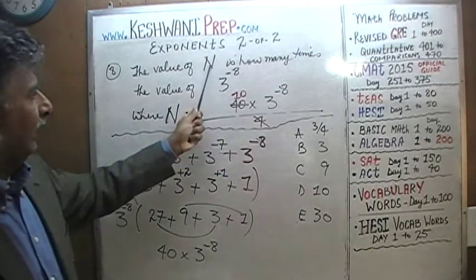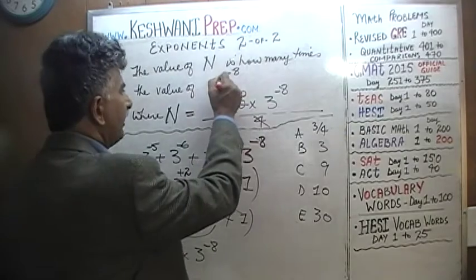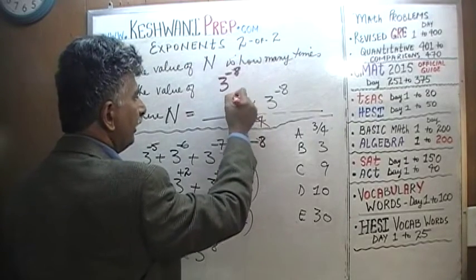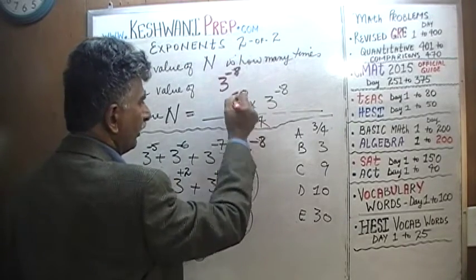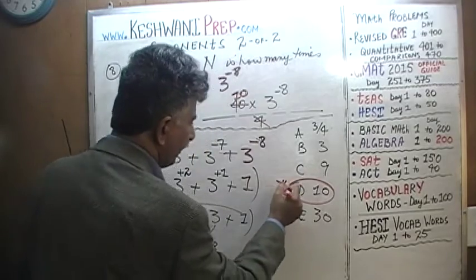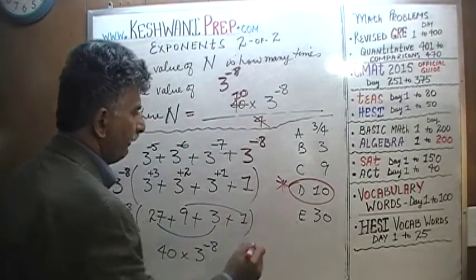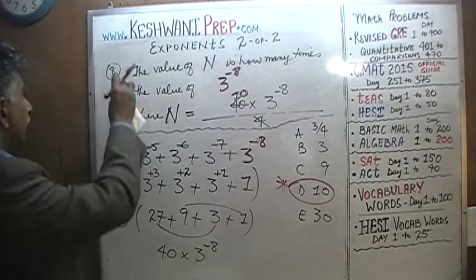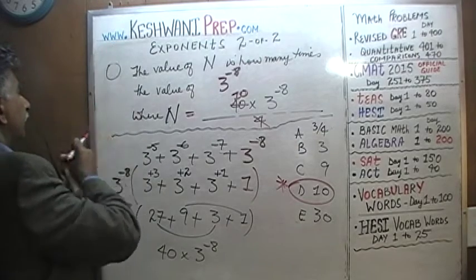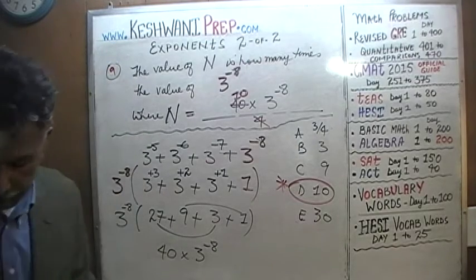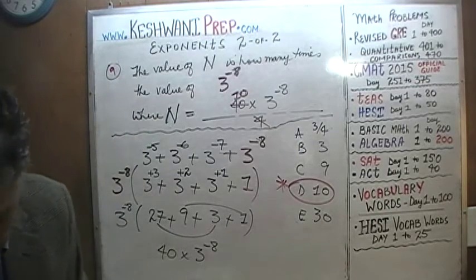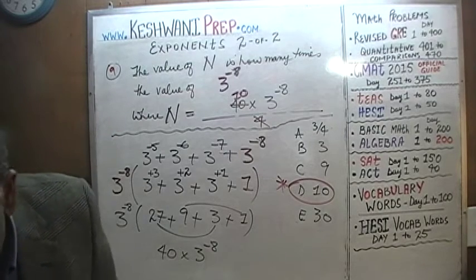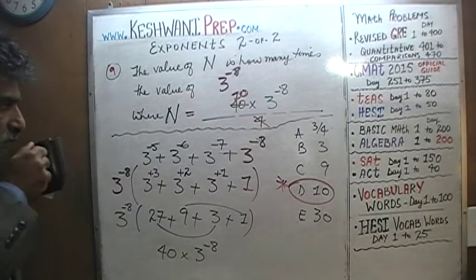The question was: N is how many times 3 raised to negative 8? We just found out it is 10 times that quantity — the answer is 10. That was number 9. Let's do the very last one. As soon as I finish setting it up on the blackboard, you're going to do it yourself.